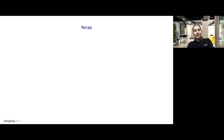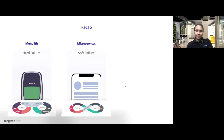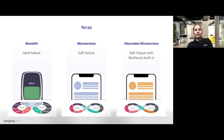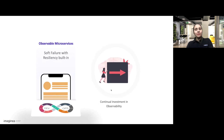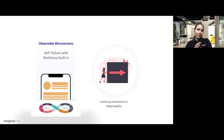Let me recap. We started with monolith and learned a lot from hard failures. When we started building microservices, system availability is ensured even though there are some failures. Now it's time to build observable microservices with built-in resiliency mechanisms. Essentially, the observability culture changes the way we think about the development process, testing process, and operation process — it injects an operational mindset into development, increasing resiliency and making operations and monitoring much simpler. It's not a one-time heavy lifting job; it has to be a continual process we should embrace.